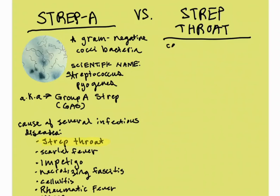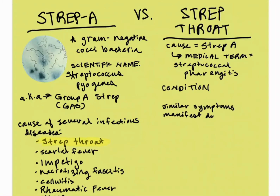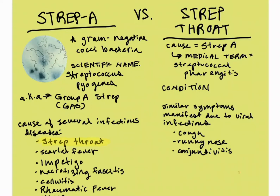Strep throat is the medical condition caused by Strep A bacteria. Its medical term is Streptococcal pharyngitis. Viral throat infections can sometimes manifest symptoms similar to strep throat, but those symptoms are going to more typically revolve around coughing, runny noses, conjunctivitis, and hoarseness compared to strep throat.